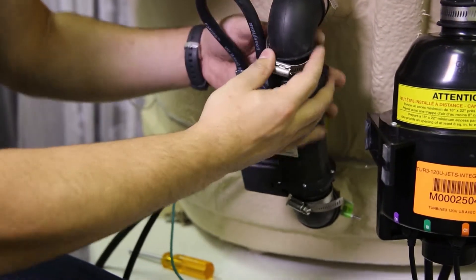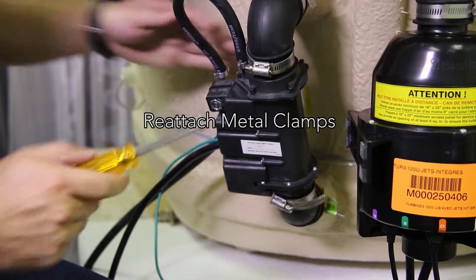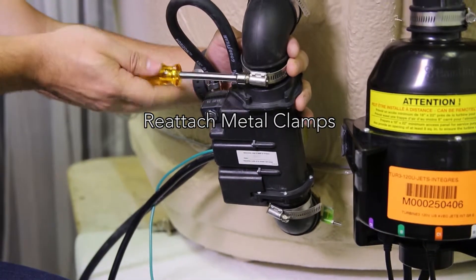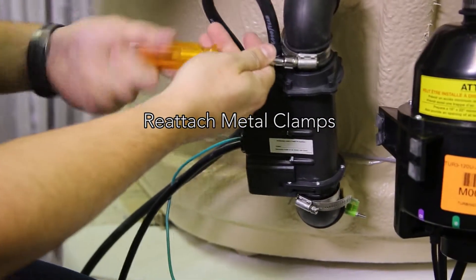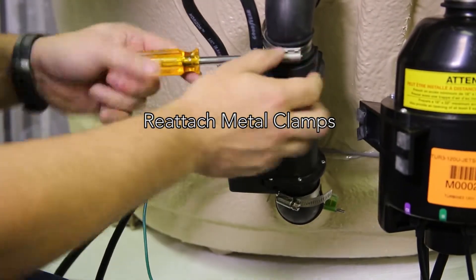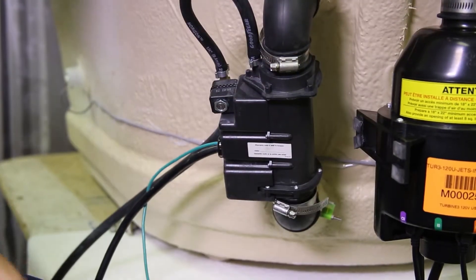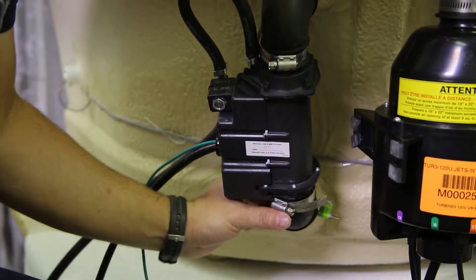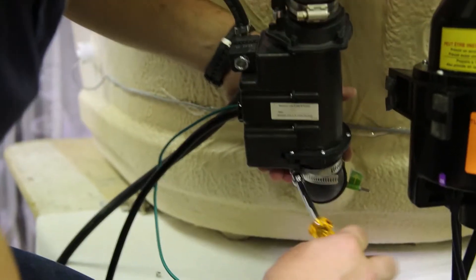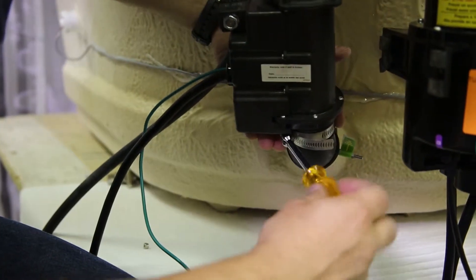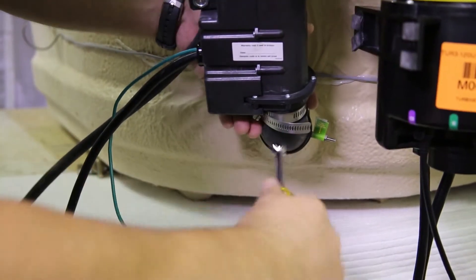Now we have this metal clamp to reattach. Put it back in place. Again, over-tightening this, I know I mention it a lot, but it's really important to not go overboard. Just tighten it down. There we go. As soon as you feel the tension, just do a quarter turn and that'll be enough. Same thing with this one. Hold it down, screw it back in. There we go.